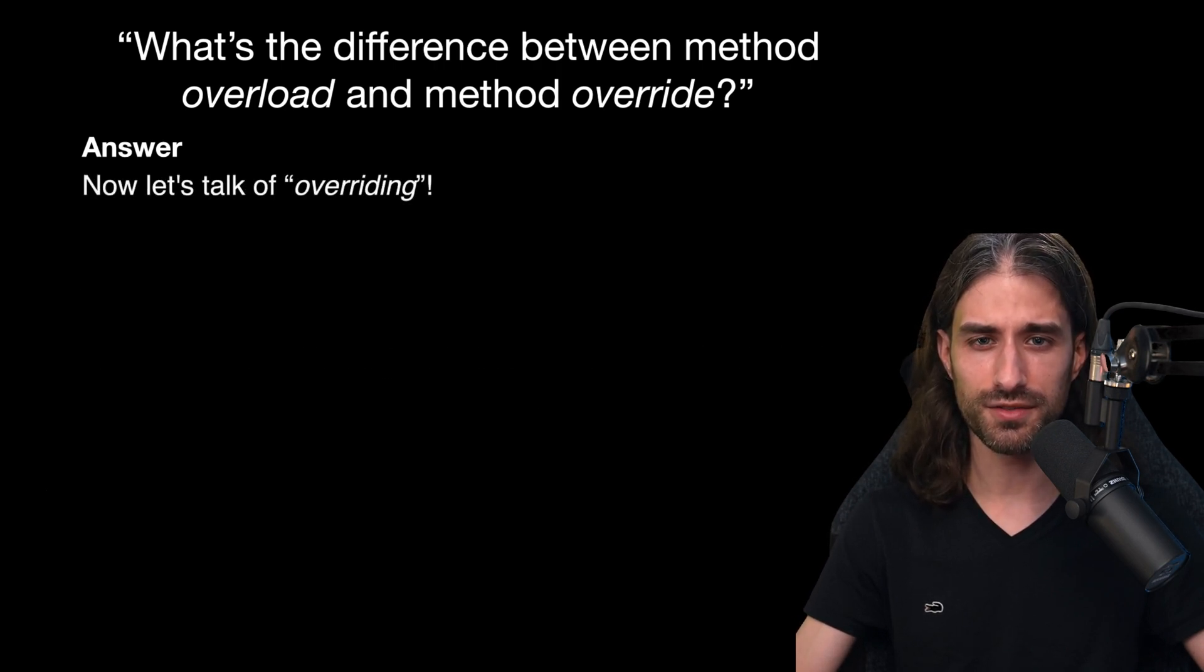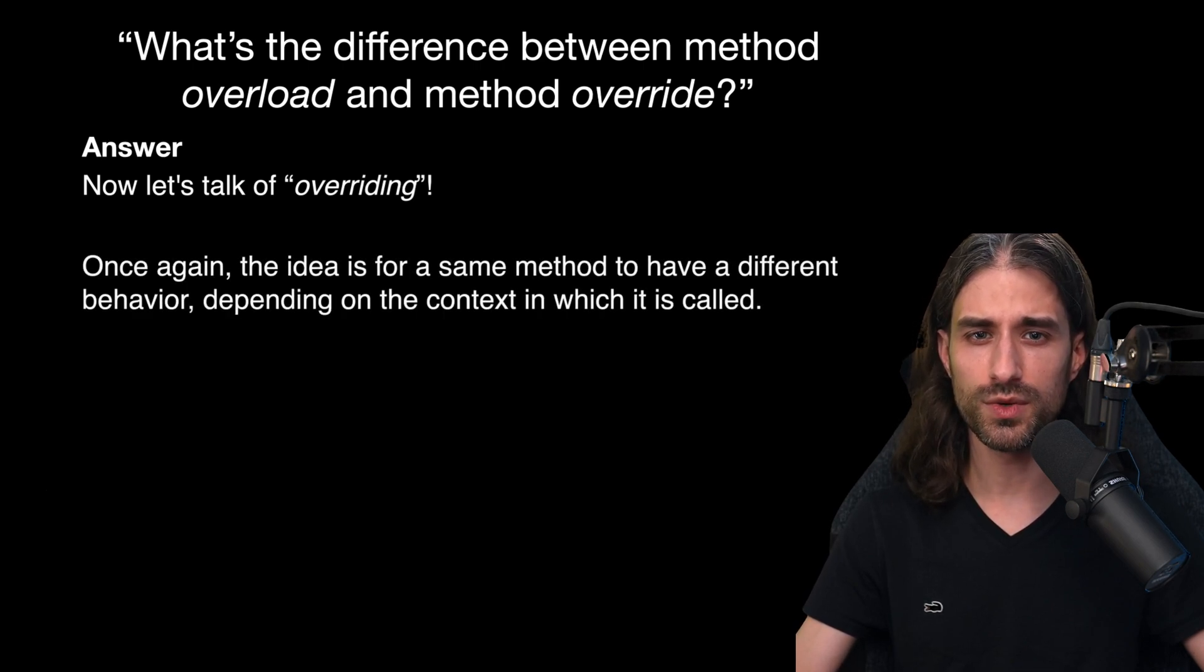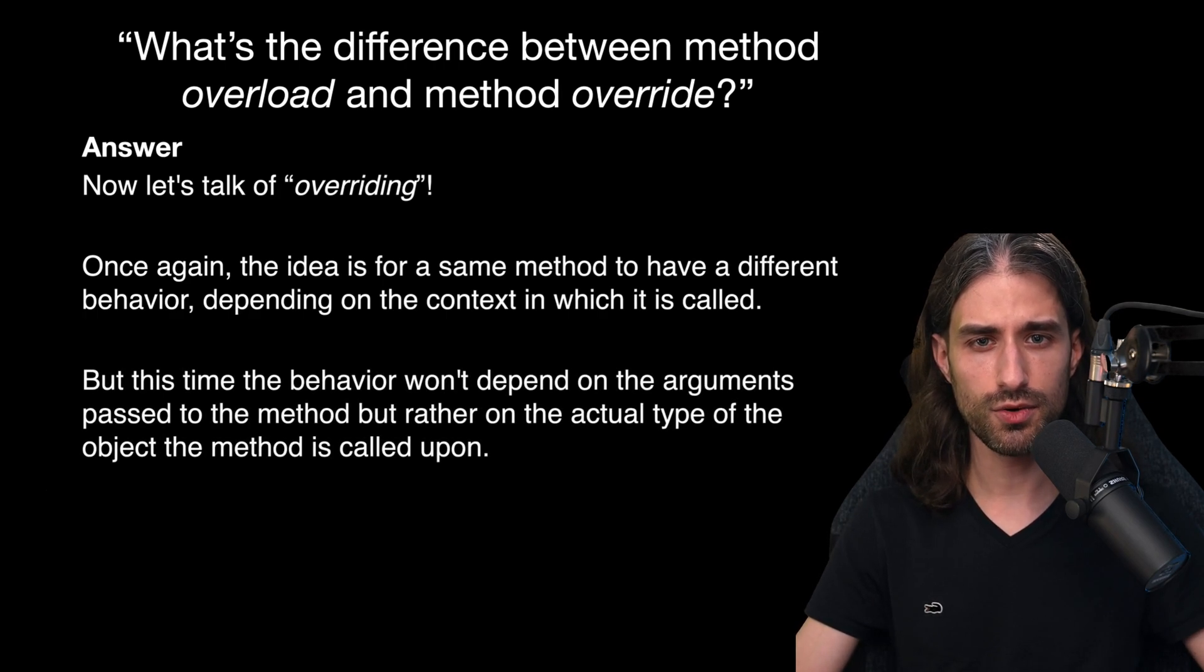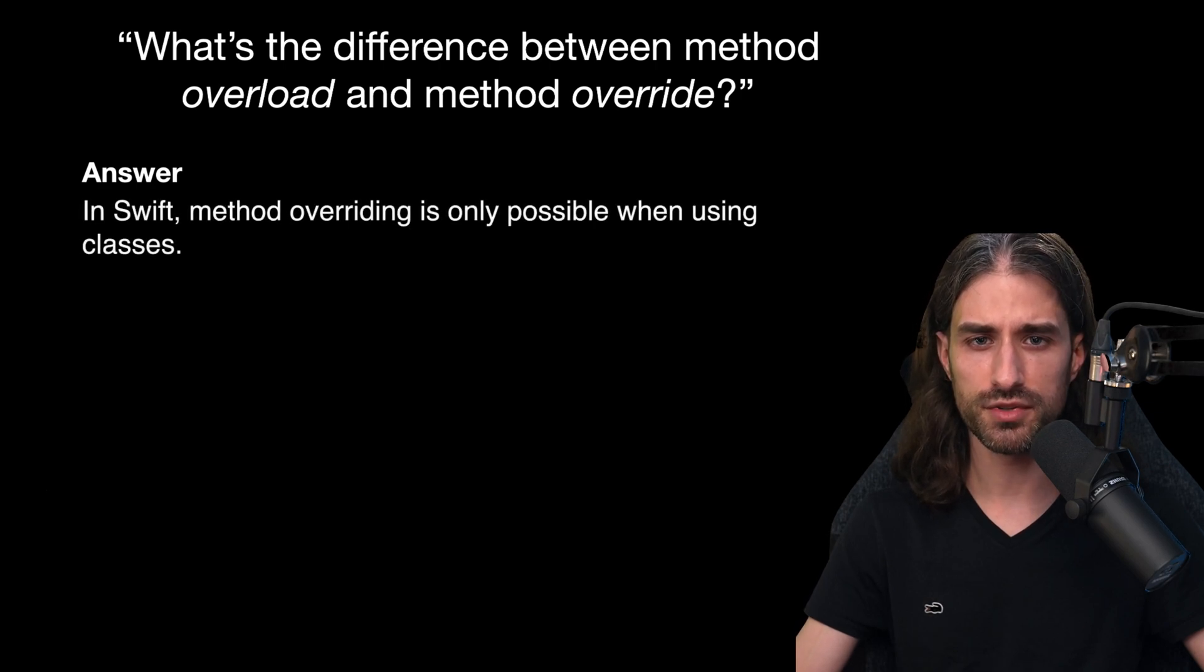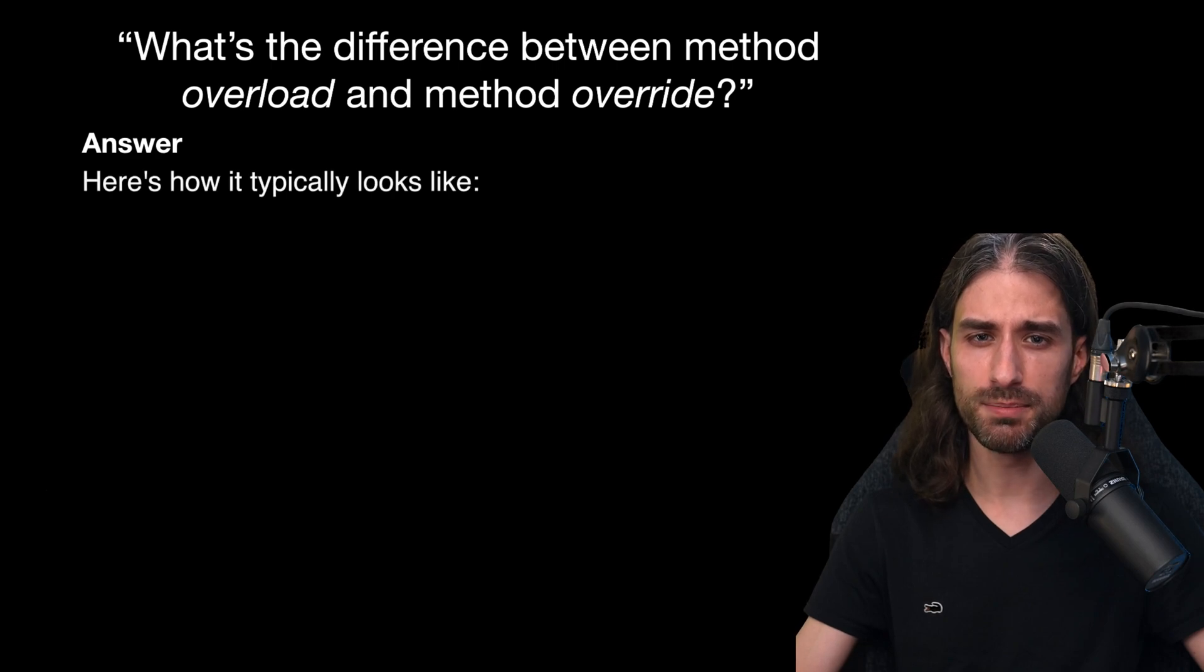Now let's move on to the second part of the answer and talk about overriding. Once again, it's a similar idea because we want the same method to have a different behavior depending on the context in which it is called, except that this time the actual behavior won't depend on the type of the arguments passed to the method but rather on the actual type of the instance that the method will be called on. In Swift, method overriding is only possible when we use classes, and here's how it would typically look like.